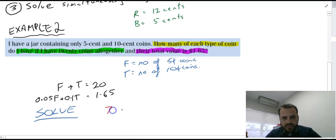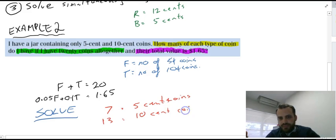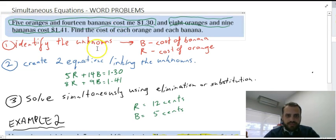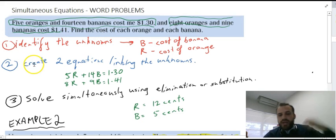And for this one down here, I have 7 5-cent coins and I have 13 10-cent coins. And if you put 7 and 13 into this equation, obviously you'll get 20. And if you put 7 and 13 into this equation, you'll get $1.65. So you can work through them, you can try them yourselves. But the real important part of solving word problems is to be able to read them, identify the unknowns, and then create two equations linking those unknowns. Once you've done that, the rest is basic simultaneous equations.